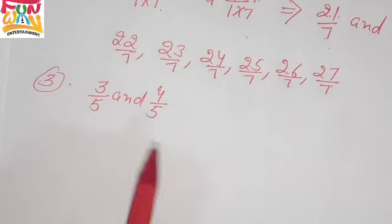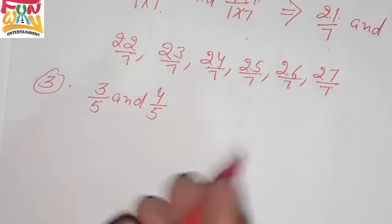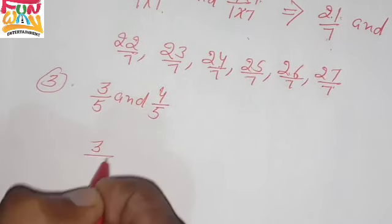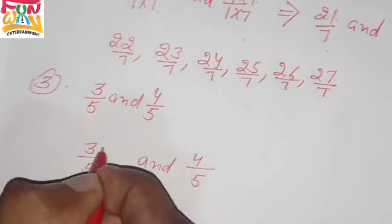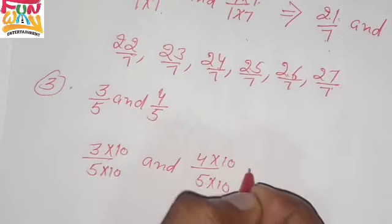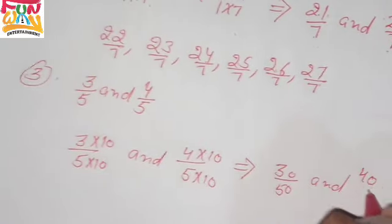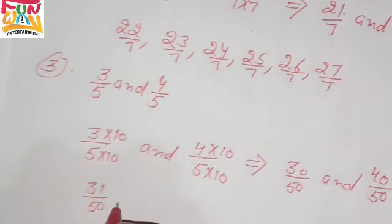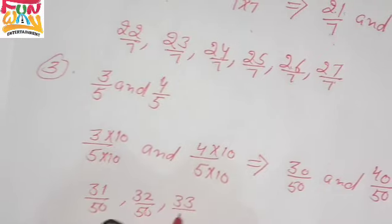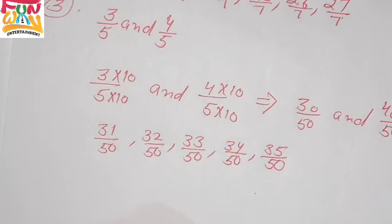To find the numbers between 3 over 5 and 4 over 5, we multiply both numerator and denominator by 10. This gives us 30 over 50 and 40 over 50. Now the numbers between them are 31 over 50, 32 over 50, 33 over 50, 34 over 50, and 35 over 50. If you want to find more, you can find them. This is question number 3.